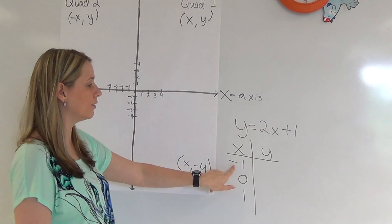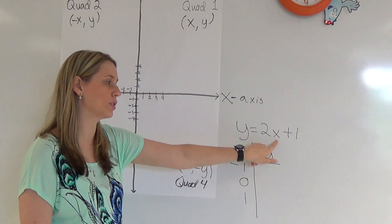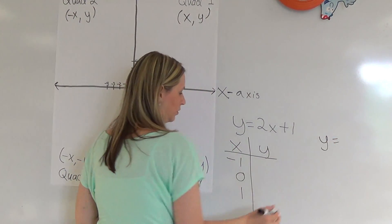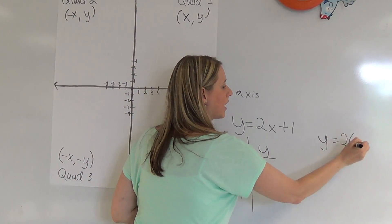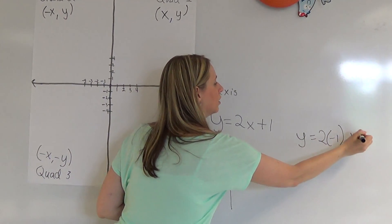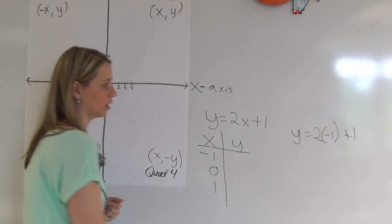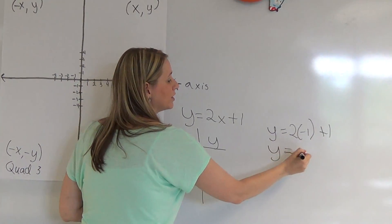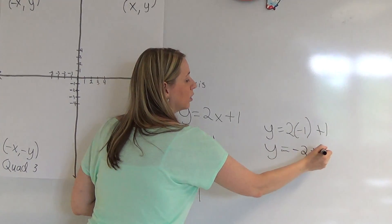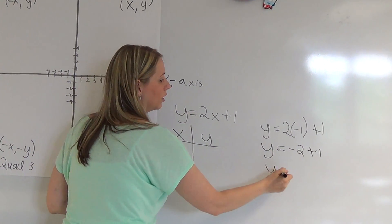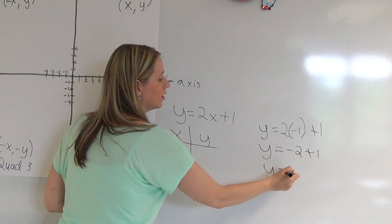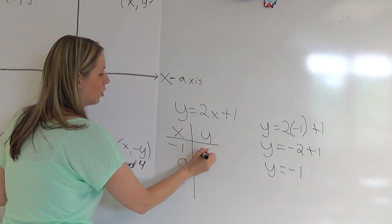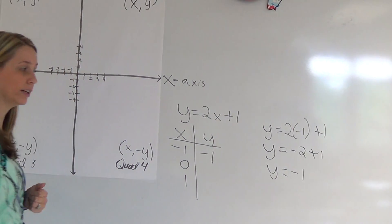Now if I plug in negative 1 for x, I'm going to plug it in for x. So we get y is equal to 2 times negative 1 plus 1. You'll multiply — 2 times negative 1 is negative 2, plus 1. Negative 2 plus 1 is negative 1. So our y on this one is going to be negative 1.